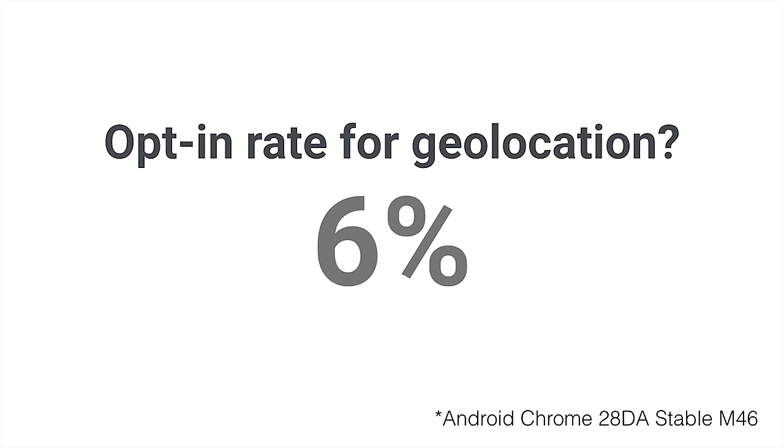We're pretty close to that three number. Our opt-in rate today is 6%. And we have a few guesses as to why this opt-in rate is so low — our biggest bet is it's because sites are asking for this permission at the wrong time.